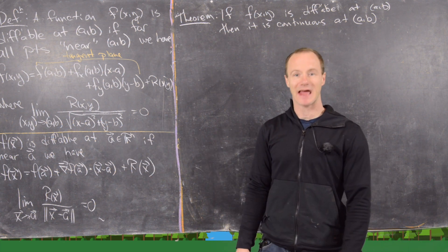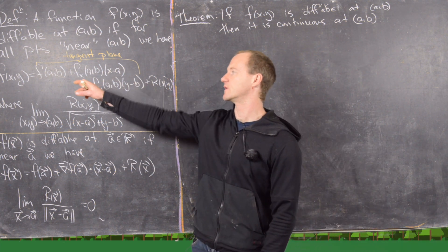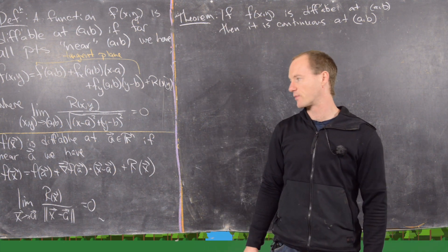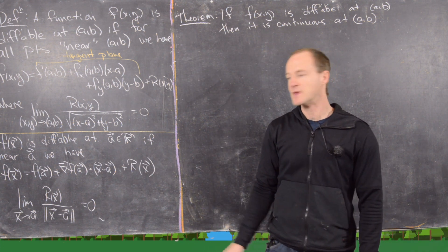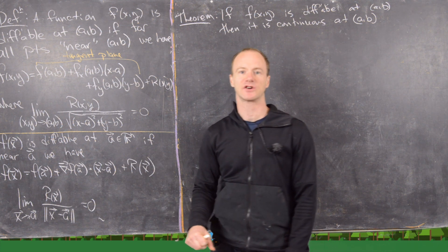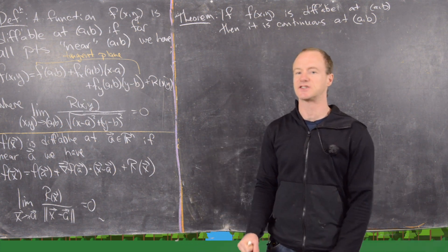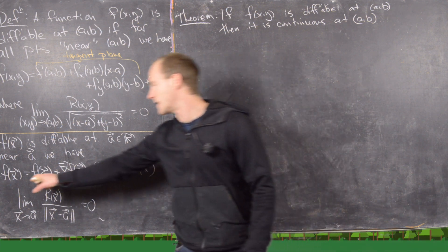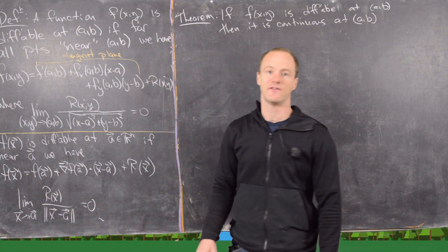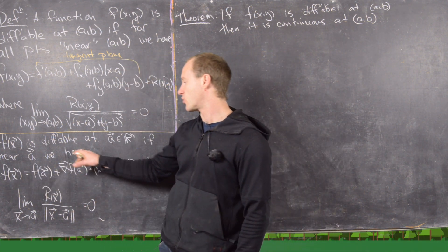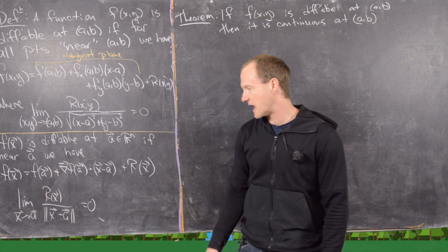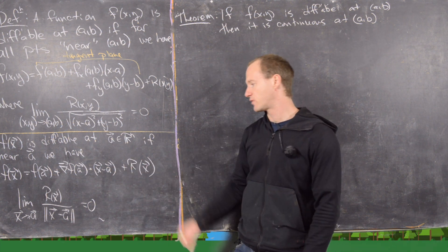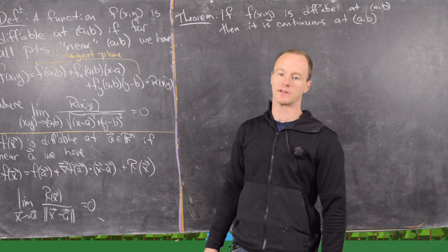We can calculate this remainder function — it's just the difference between the original function and that linear approximation. Furthermore, we have a vector version which extends to Rⁿ very nicely: f(x) = f(a) plus the gradient of f evaluated at a dotted with (x−a) — a vector — plus r(x), with a similar limit condition.